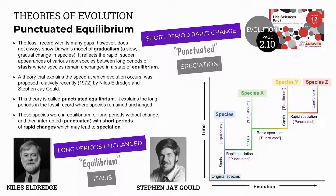Stasis comes from the word stationary, which means not moving — no change, fixed. Punctuated equilibrium attempts to explain the typical pattern of fossils discovered in the fossil record, where the younger and older fossils are often very similar to each other.